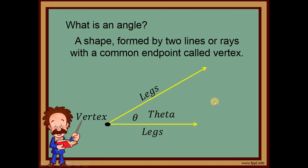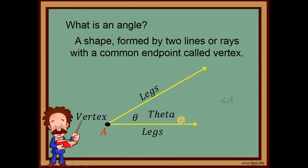Now, what do we call the two rays that form the angle? Those are called legs or sides. Next, how do we name an angle? We can use one letter — we can name it using its vertex. So if this vertex is point A, we can name this angle as angle A. Ganun na kasimple.